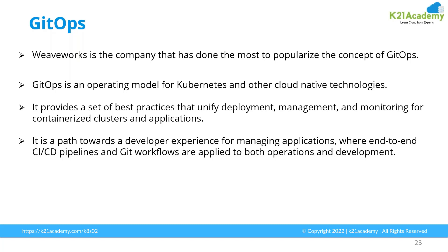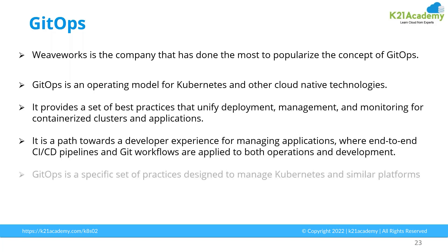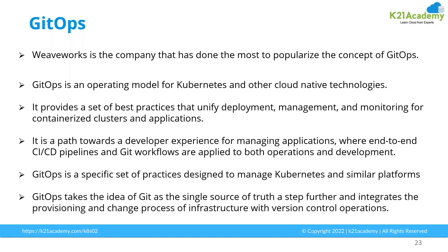GitOps is a path towards a developer experience for managing applications where an end-to-end CI/CD pipeline is built. GitOps uses CI/CD pipelines to deploy applications end-to-end, automating both application deployment and infrastructure tasks — like automating your Kubernetes tasks, deploying applications on Kubernetes, scaling up Kubernetes, and all those things. GitOps is a specific set of practices designed to manage Kubernetes and similar products, including any container platforms like Tanzu, OpenShift, Rancher, or Rocket. In a nutshell, GitOps is a set of practices that can automate both application deployment and infrastructure platforms.